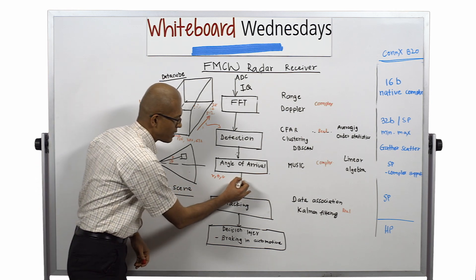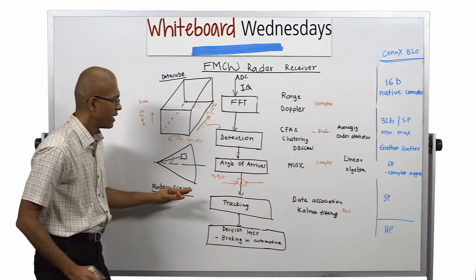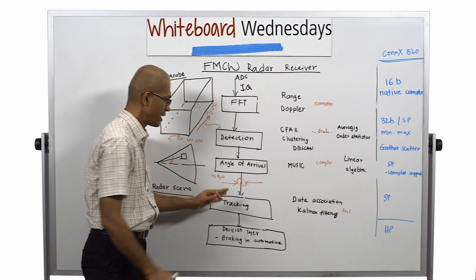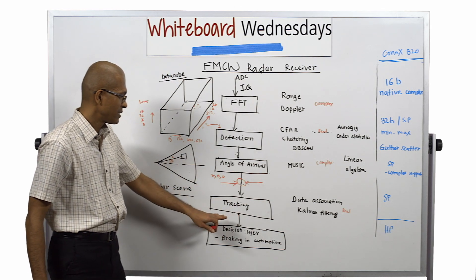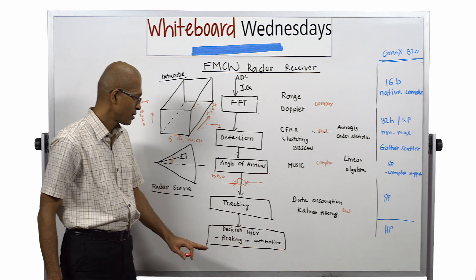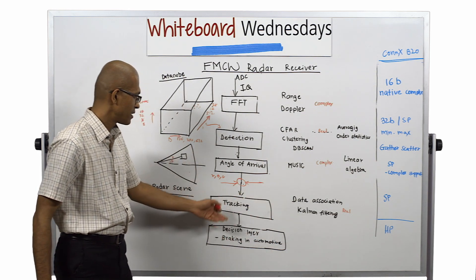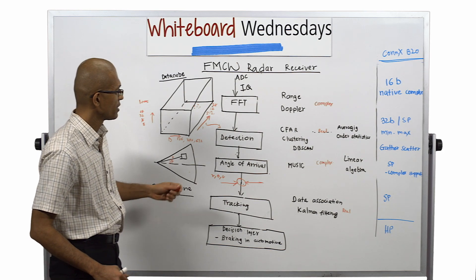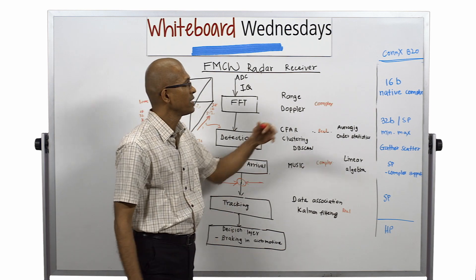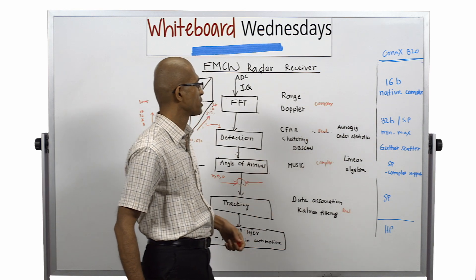There can be multiple sensors providing detection information, and that information from multiple sensors can be fused together, with tracking also performed on the fused data. The tracked data is then passed on to higher levels for decision making — braking in an automotive system is an example of taking a decision on tracked data. Now, having seen the radar receiver signal processing flow, let us see how the features of Connex B20 will be used for this processing.